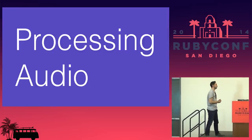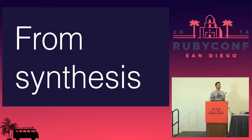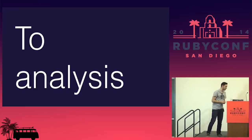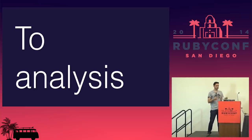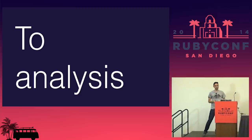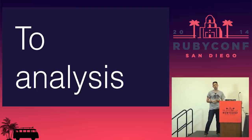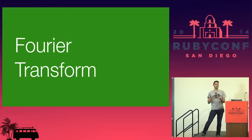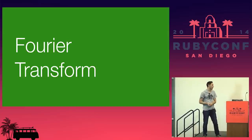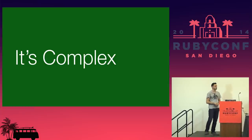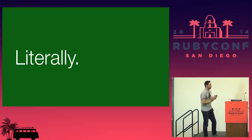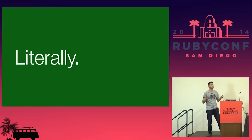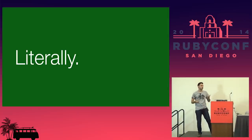We talked about audio synthesis, which is basically creating audio from nothing. Now we're going to talk a little about analysis of audio — transforming audio, visualizing it, looking at it. There's one important tool used when analyzing audio called the Fourier transform. It's probably the most important tool you can use when doing audio processing. The math is actually complex — literally complex math — so I'm not going to go into it, but I want to talk about the fundamental principles.